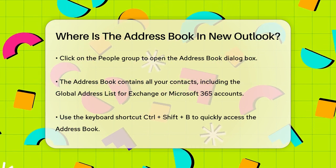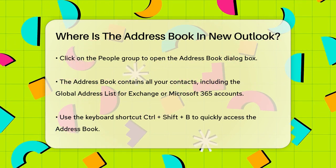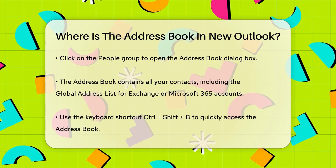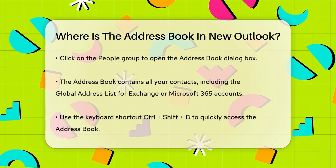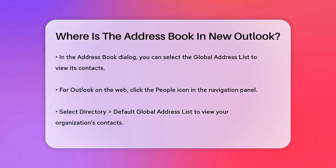Another quick way to access the address book is by using a keyboard shortcut. Simply press Control+Shift+B and the address book dialog will pop up. Here, you can select the global address list to view all its contacts.